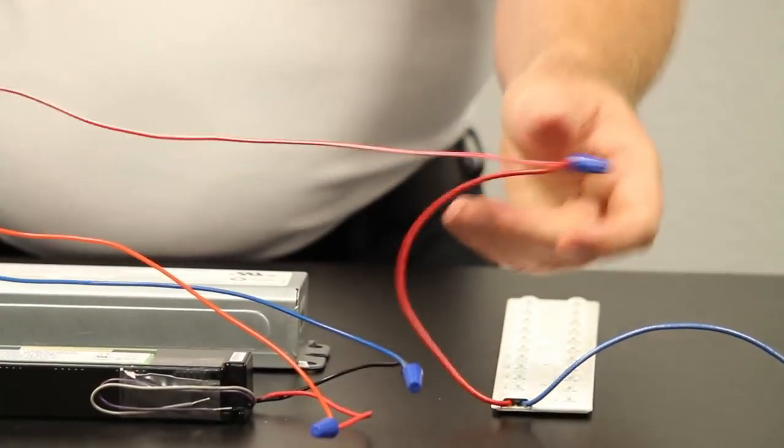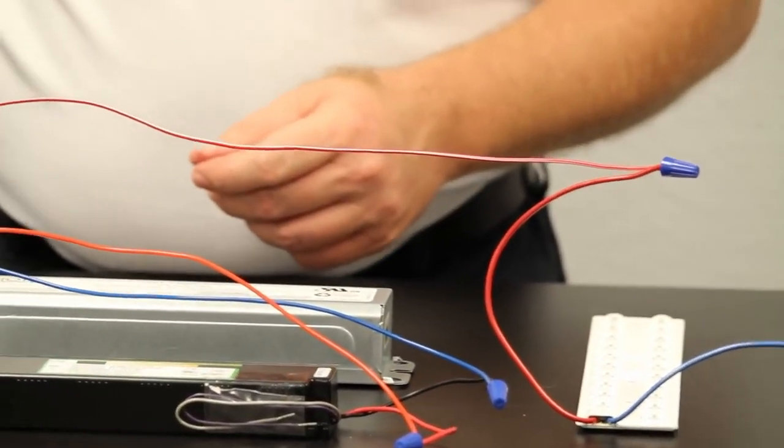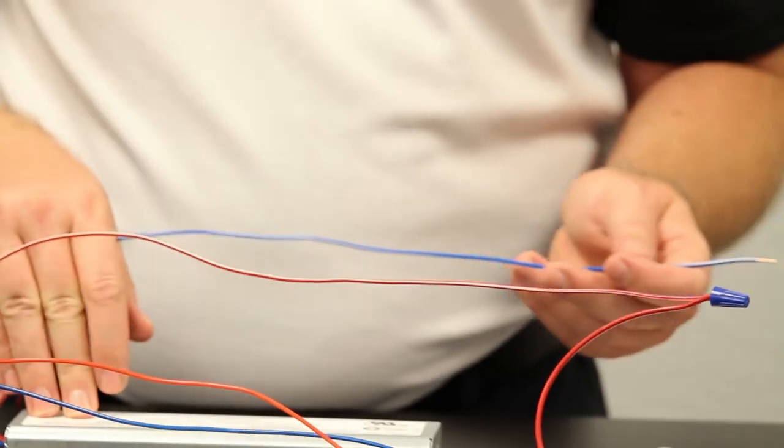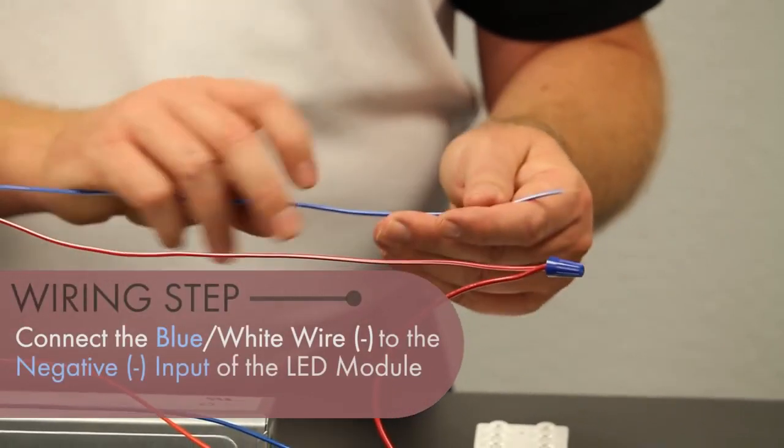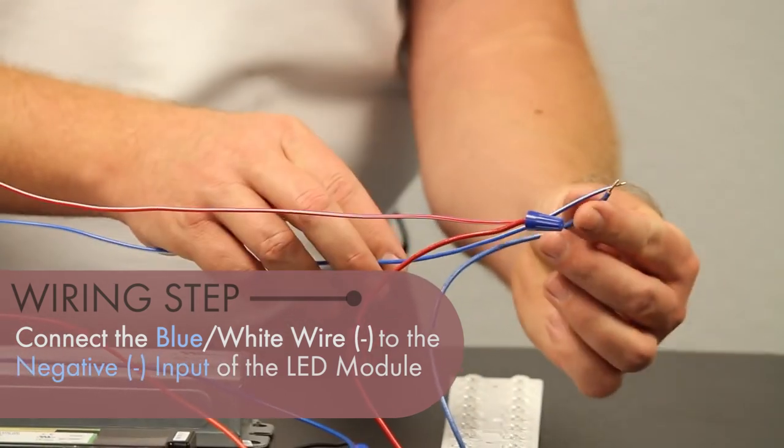Next, we're going to take the blue-white wire from the ILBCP. This is a negative connection. We will make this connection to the negative connection of the LED module.